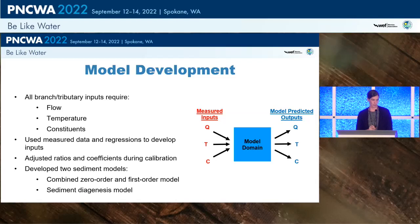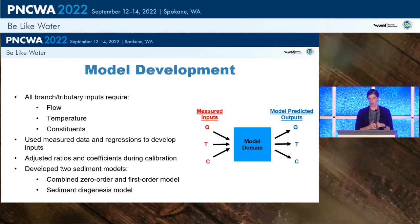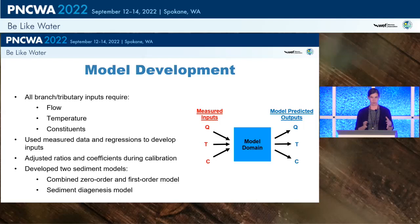For this project, we developed two sediment models: one is a combined zero order and first order model, and the second is a sediment diagenesis model. We originally started using only the sediment diagenesis model, but we were having difficulty calibrating to field data, so we decided to model in parallel with the zero order and first order model to better understand what was happening in the system and why we weren't able to calibrate with just the sediment diagenesis.